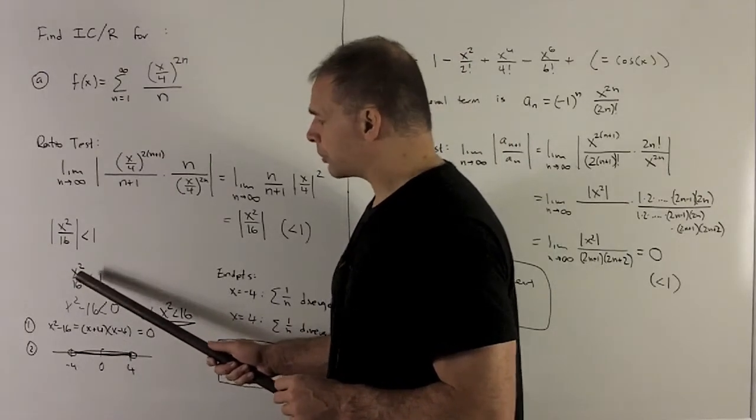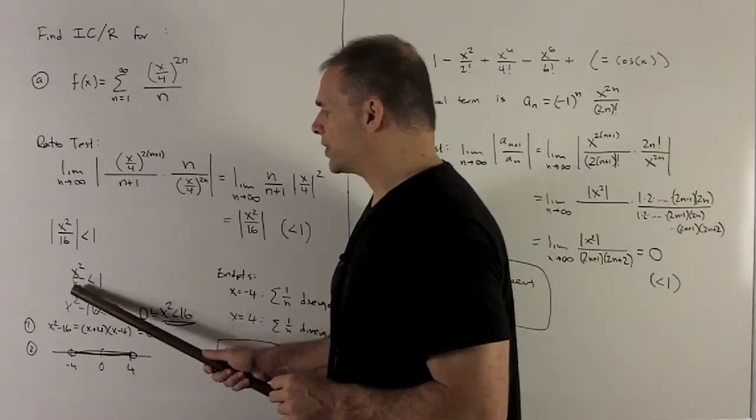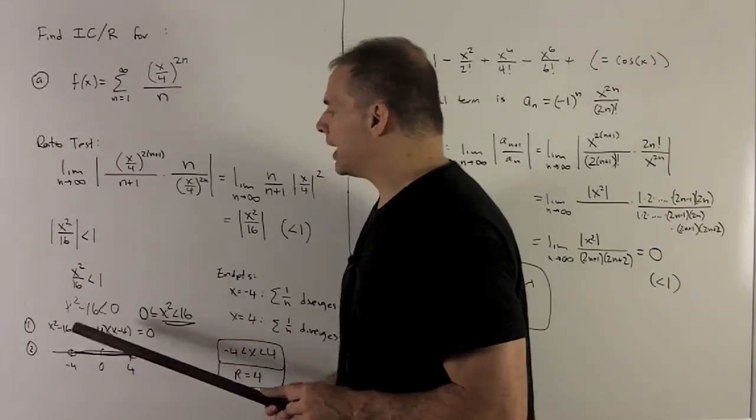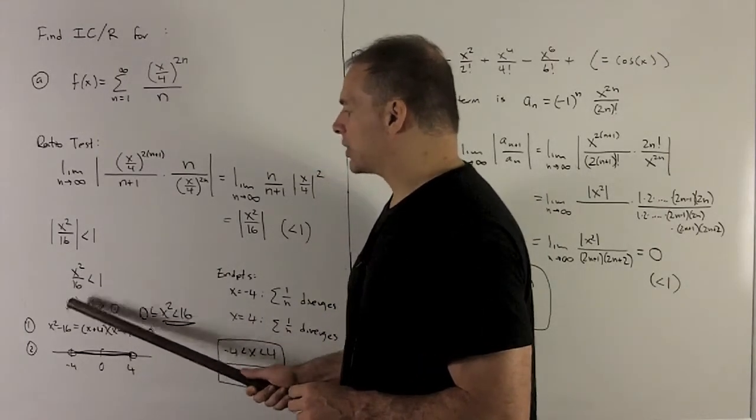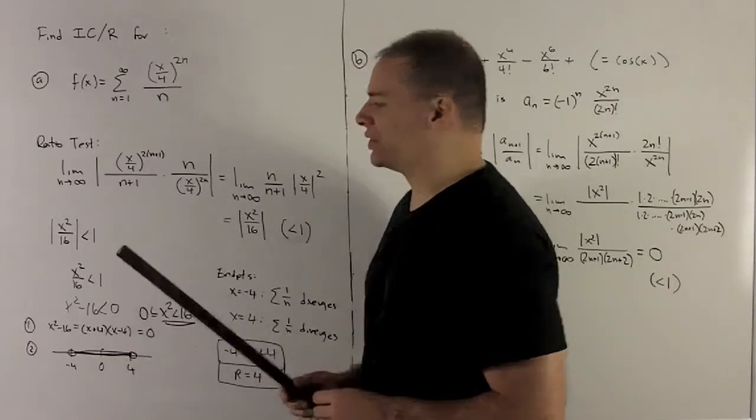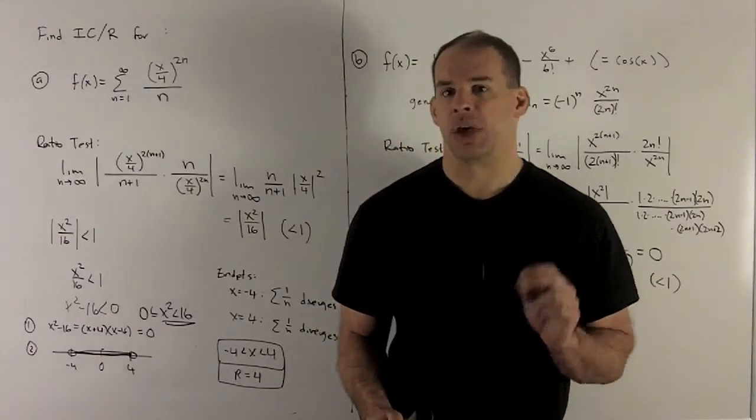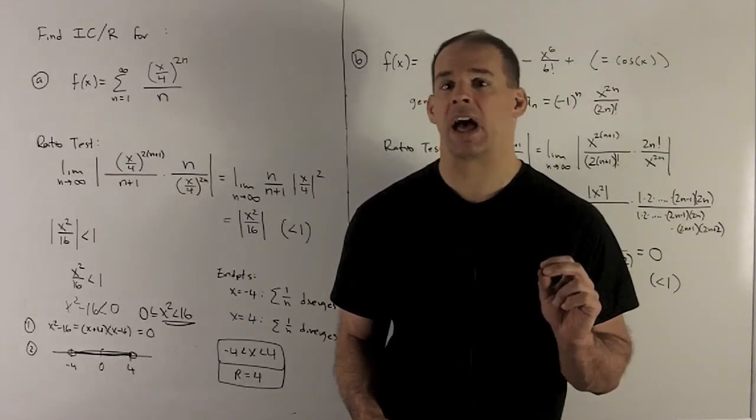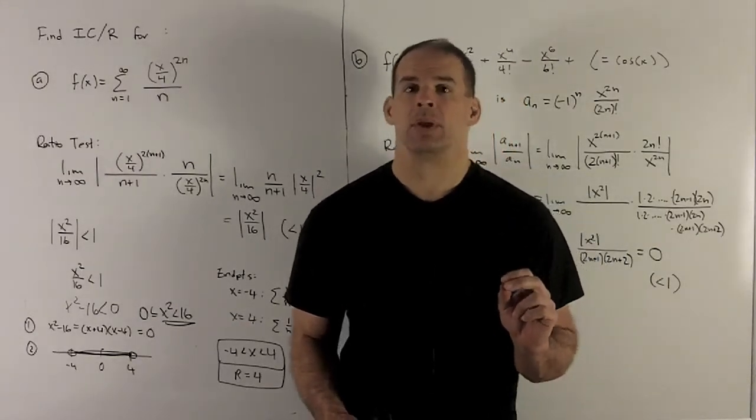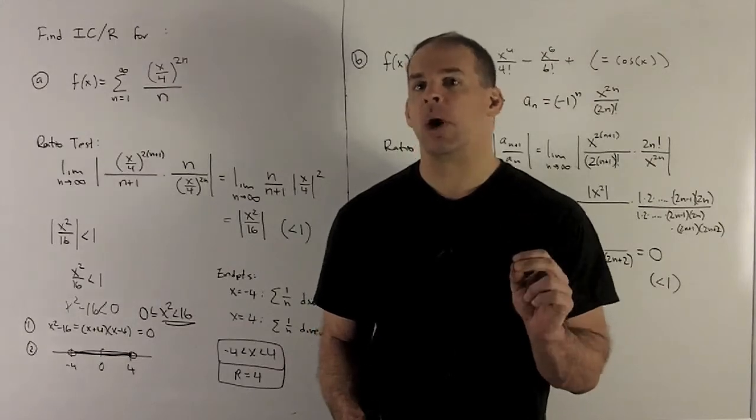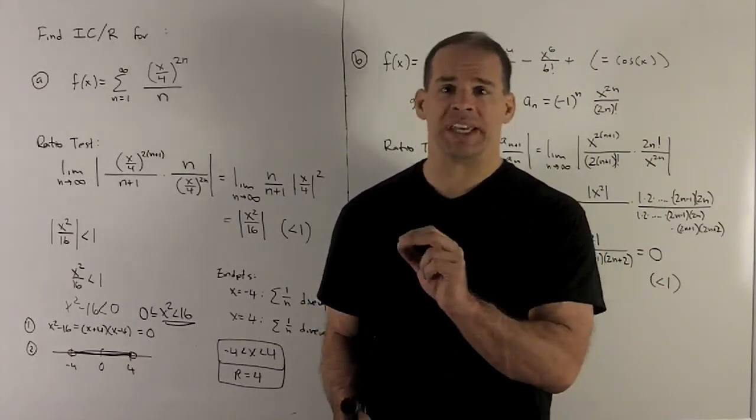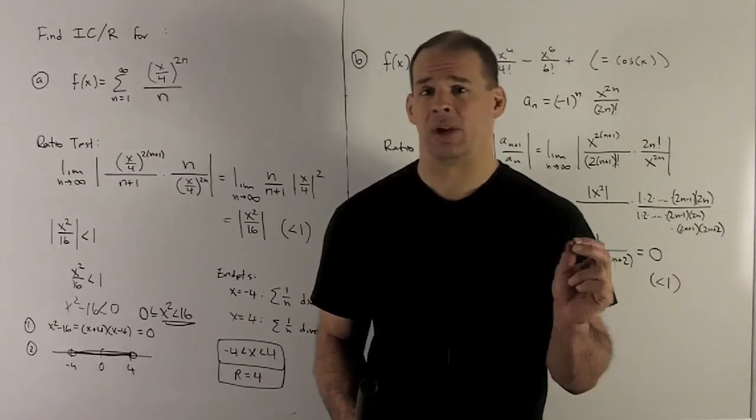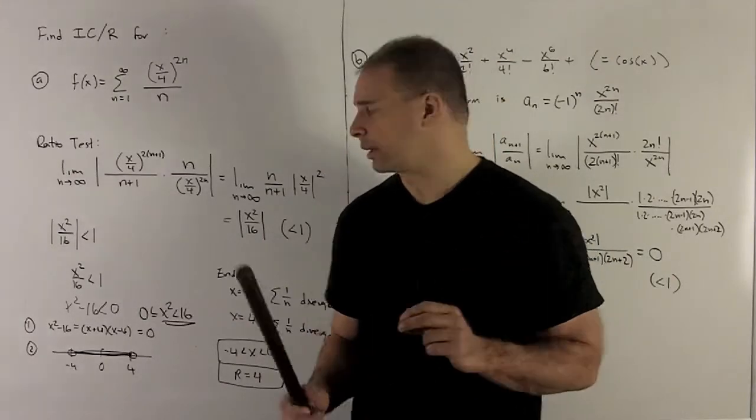Now note, I can clean this up. I can move the 16 to the other side, and then I'm going to subtract it over. So we're looking at the inequality x squared minus 16 is less than 0. So this you probably haven't seen since college algebra or pre-calc. So how do we solve that? Well, you solve it with the equality, find the points where it's equal, and then you're going to check one point in each region, and that'll tell you whether the inequality is being solved or not.